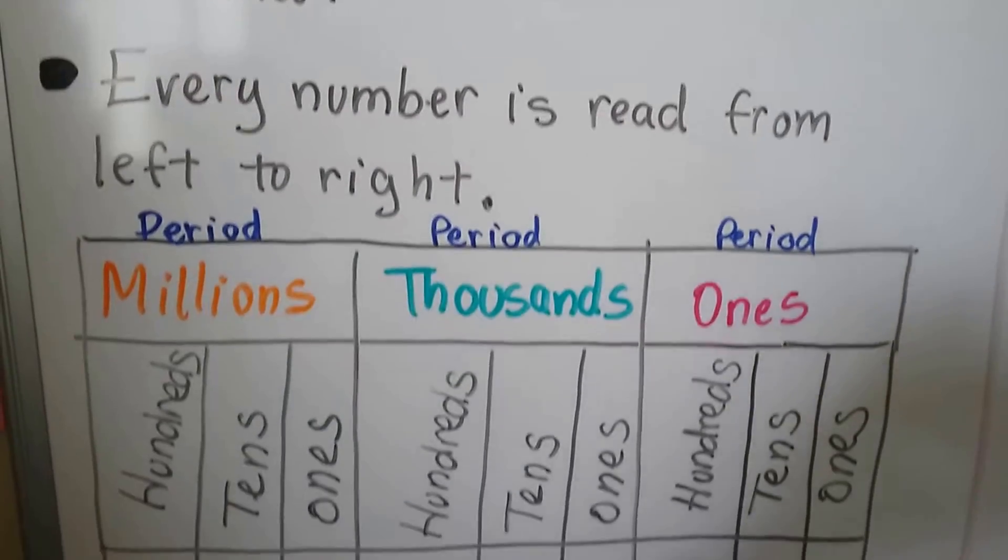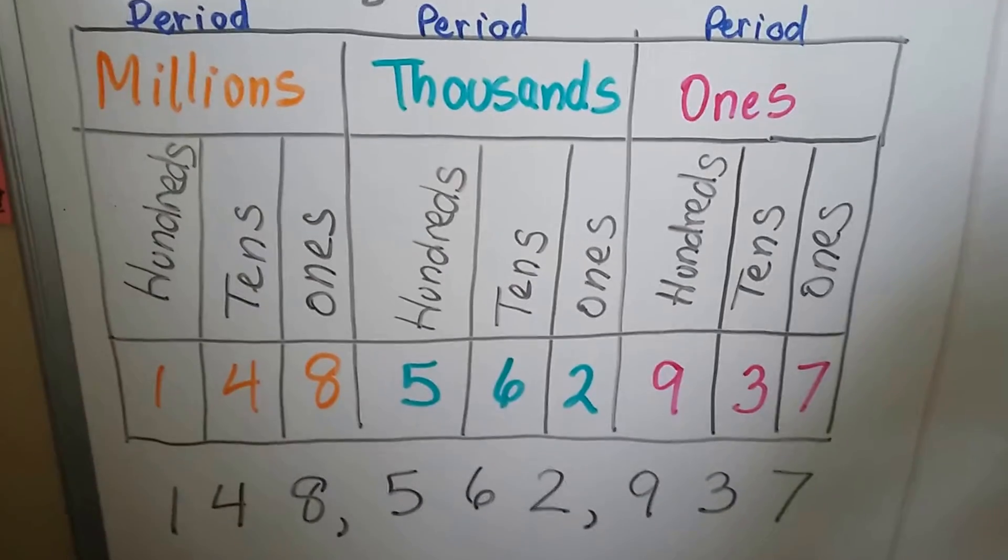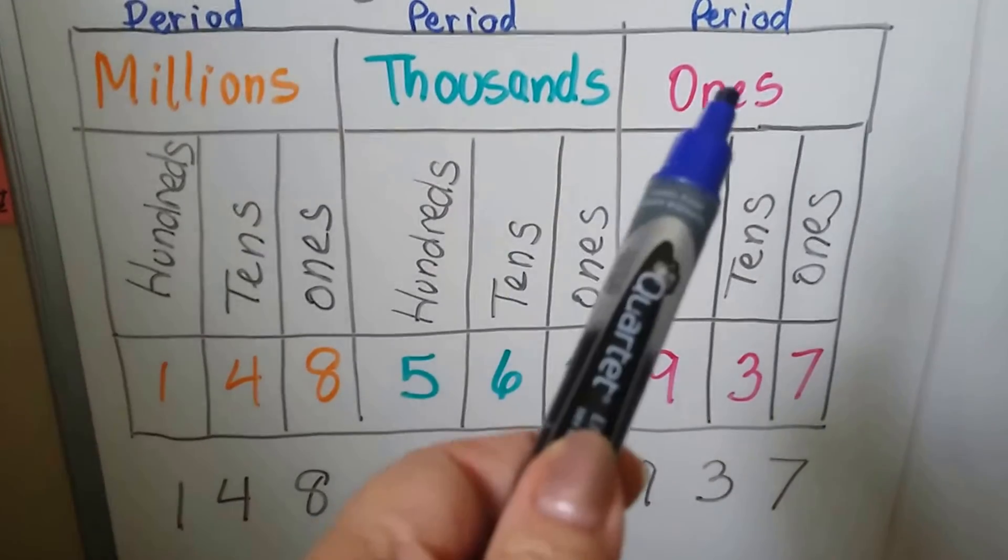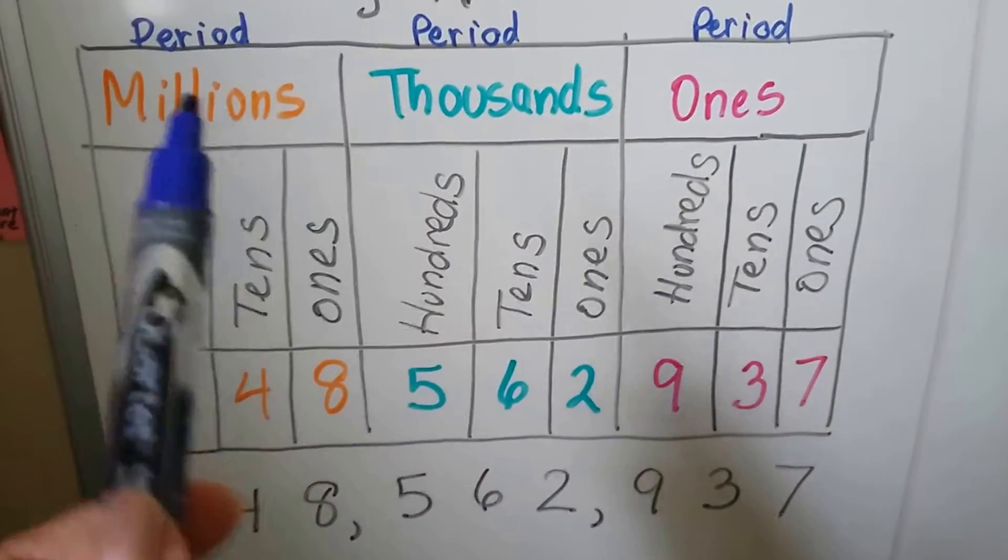And every number is read from left to right. So here I've got this table, and you can see that I've got it split into its periods. This is the ones period, the thousands period, and the millions period.